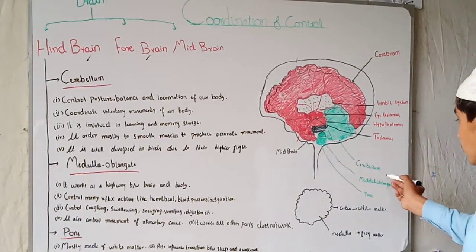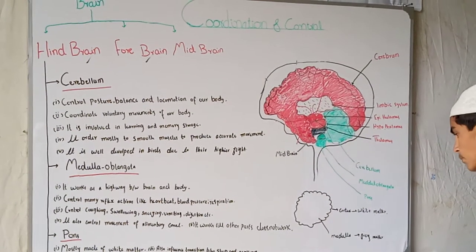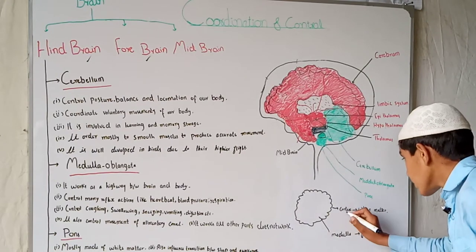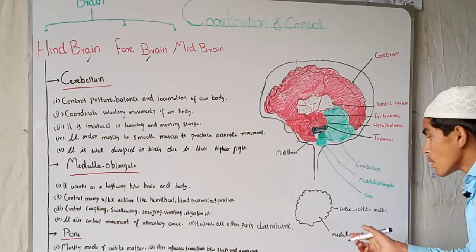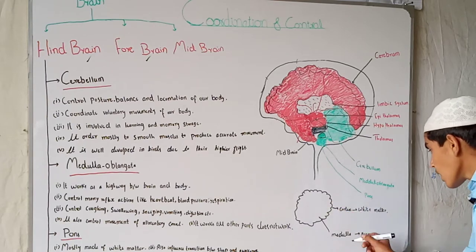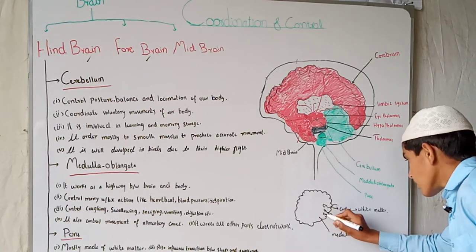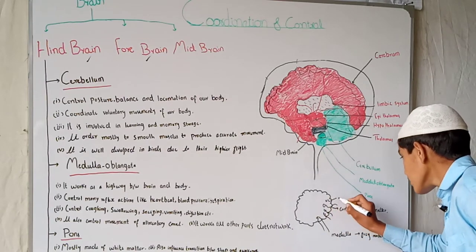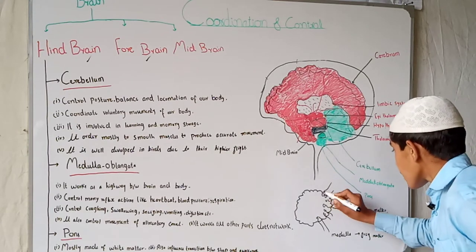Let's talk about the cerebellum first. The outer cortex part of the cerebellum consists of white matter, which is made up of the axons of neurons. The cell bodies of the neurons are located in the inner medulla, while the axons are found in the cortex part of the cerebellum.